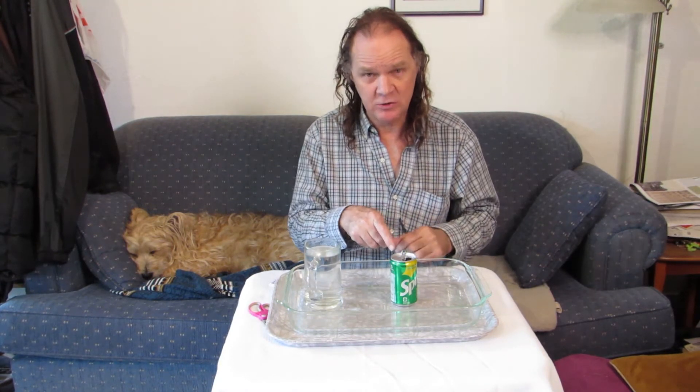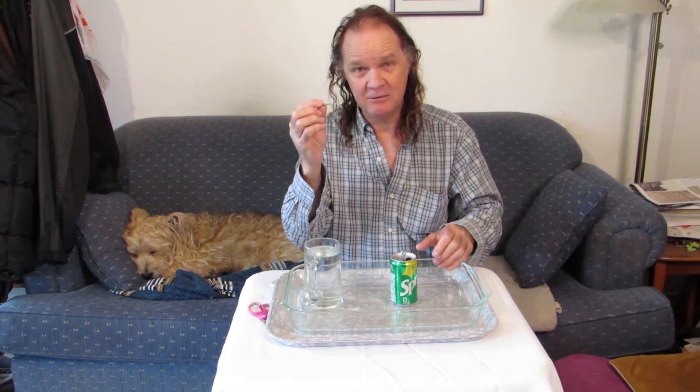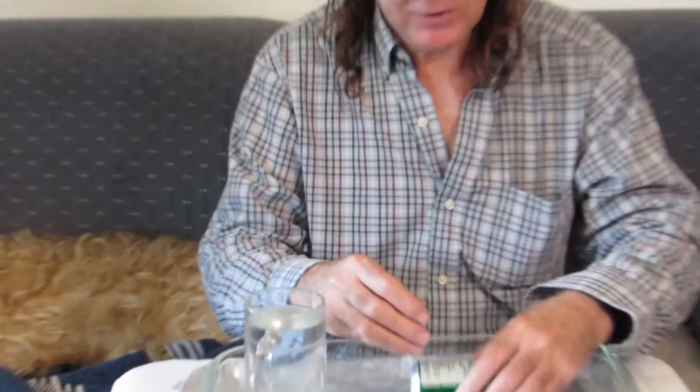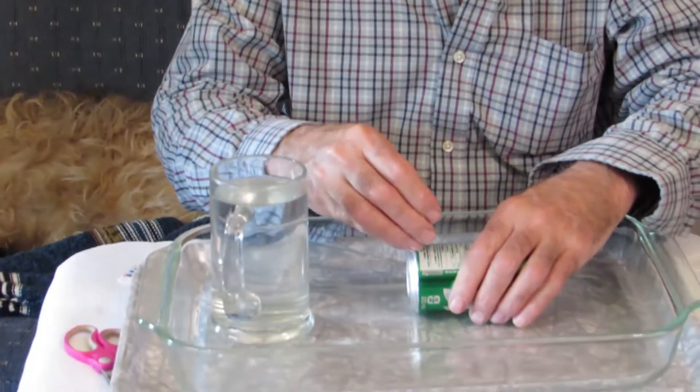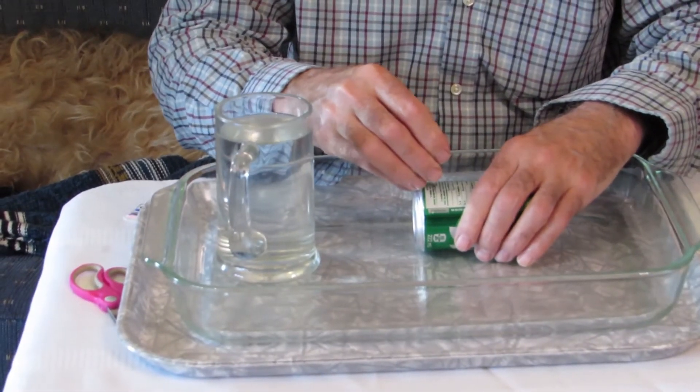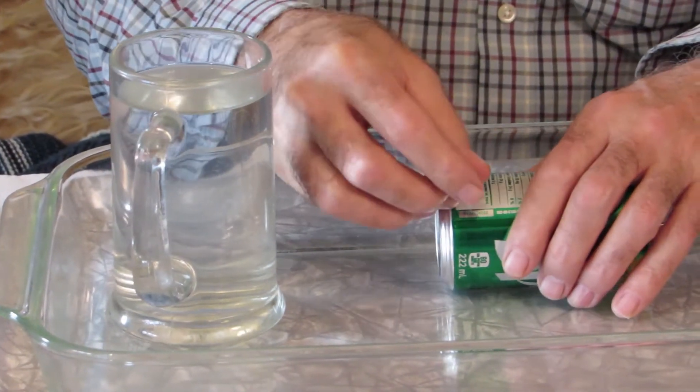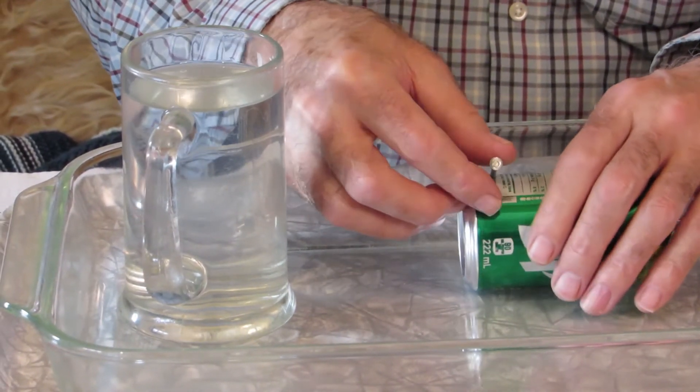We can make a replica of that using a pop can. We need a nail and some water. First thing we do is we poke three holes close to the bottom, so we have lots of pressure. We poke the hole in, then turn it, so the water will come out in that direction.